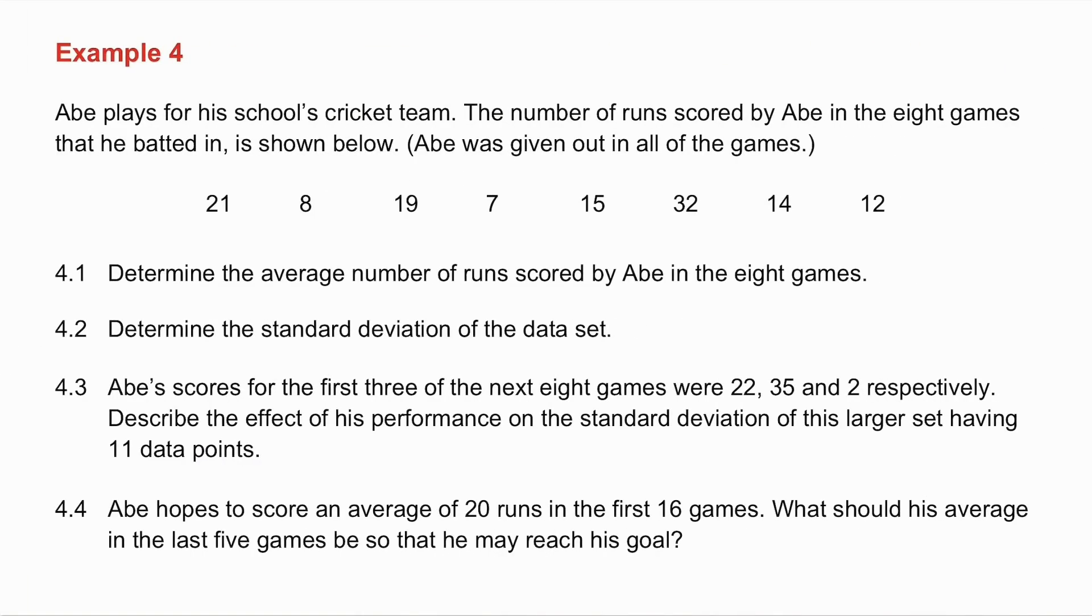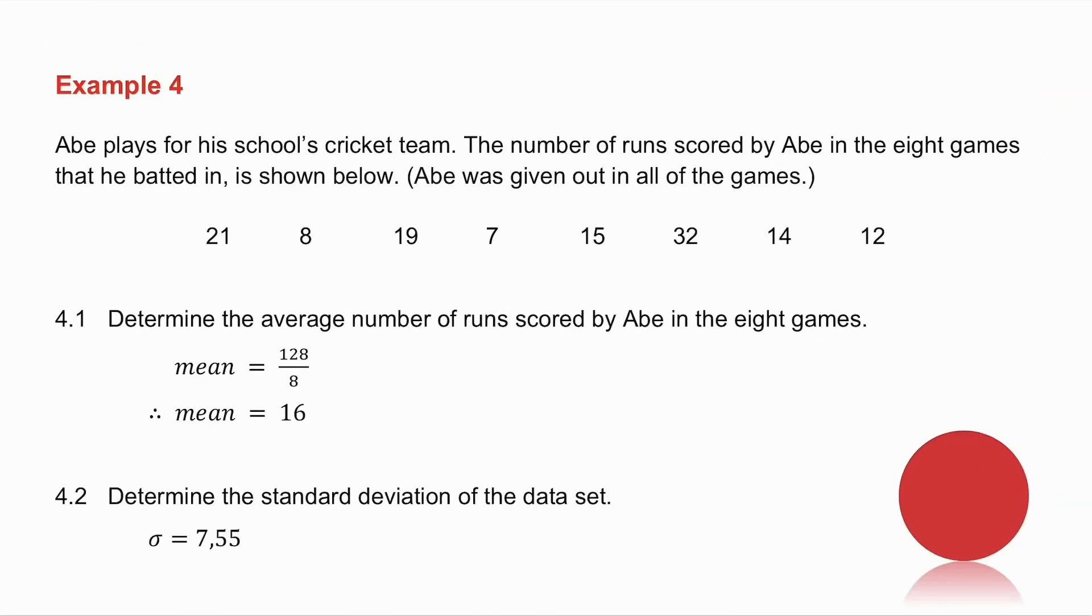Example number four. I want you to pause the video. I want you to try this yourself, and then we will do it together. 4.1, they want the average number of runs. Add all the values, and divide by 8, and you get your mean. The standard deviation, you get off your calculator. So enter all those values, use the steps that we showed in a previous video, and write down the standard deviation.